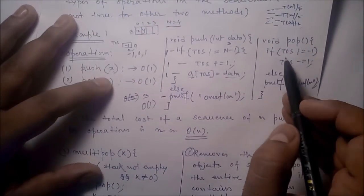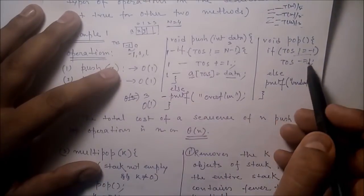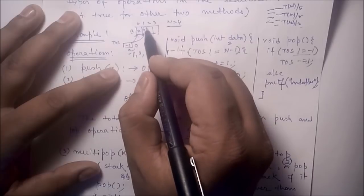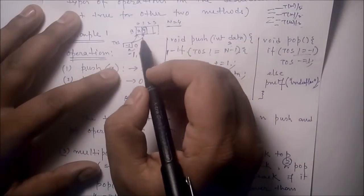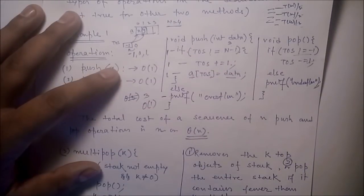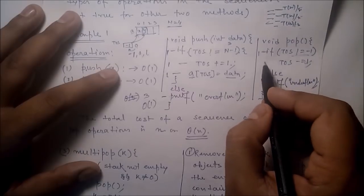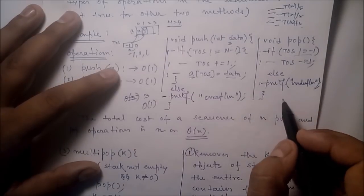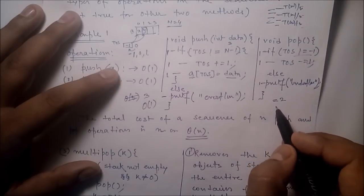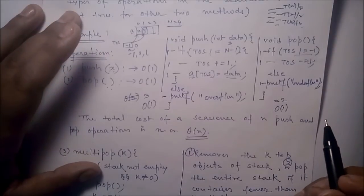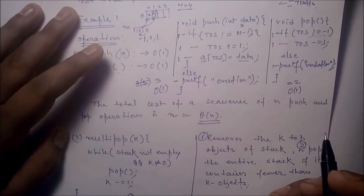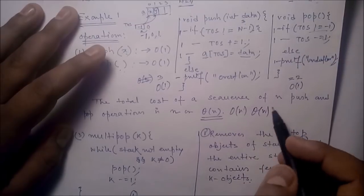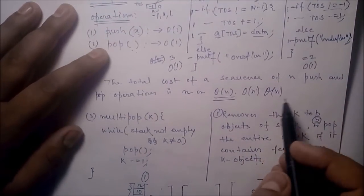The total cost of a sequence of n push and pop operations is O(n), or theta(n), since there is no upper or lower bound distinction. There is another operation called multi-pop: it pops k elements at a time. While the stack is not empty and k is not equal to 0, pop the element and decrement k. The complexity of multi-pop is O(k), since it depends on k.